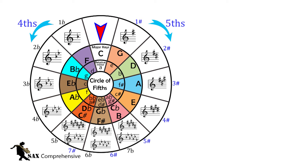To recap: if we start anywhere on the circle with a major key or minor key and move around the circle clockwise, we change the key by a fifth. There is a pattern from C to C sharp major and its relative minors shown in the addition of a sharp each time we move around. If we start anywhere on the circle and move anti-clockwise, we change the key by a fourth. The pattern from C to C flat major and its relative minors is the addition of a flat each time we move.